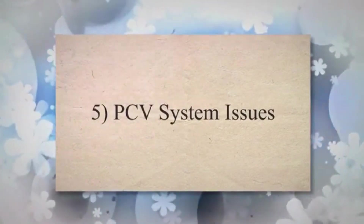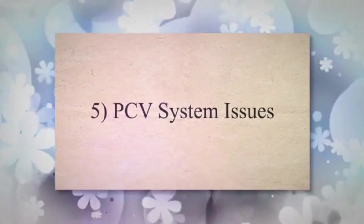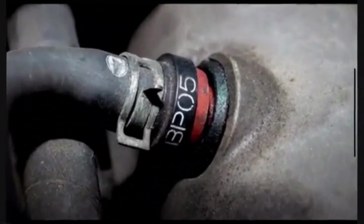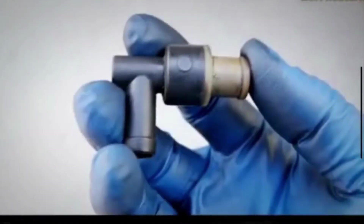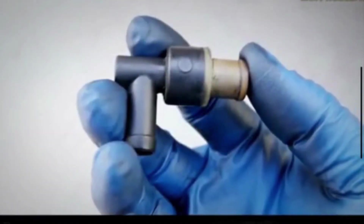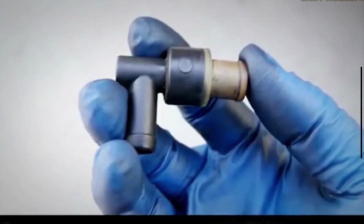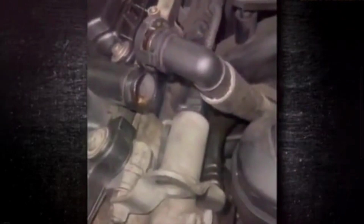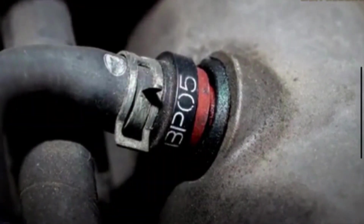5. PCV system issues. The PCV system helps manage pressure in the crankcase and recirculate harmful fumes. When it malfunctions, it can create excessive pressure within the engine, which can force oil past the piston rings and into the combustion chamber. This issue leads to spark plug fouling.